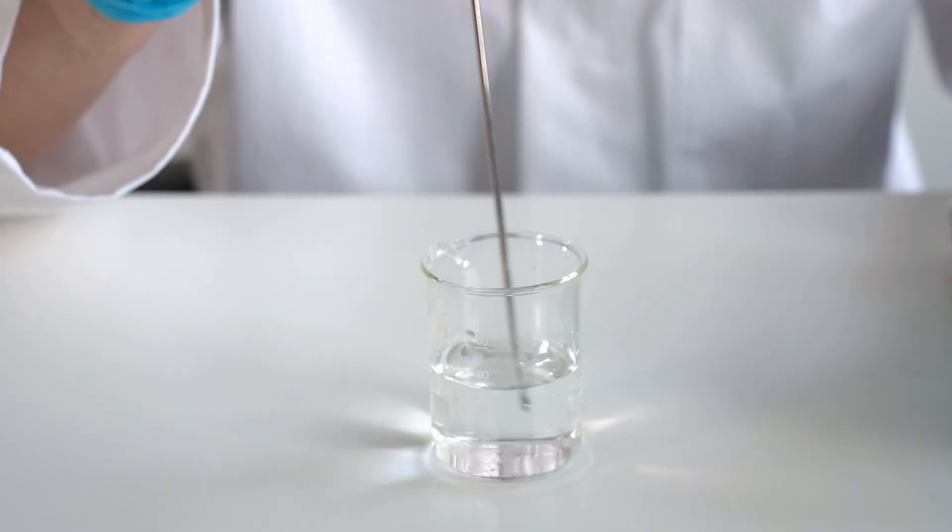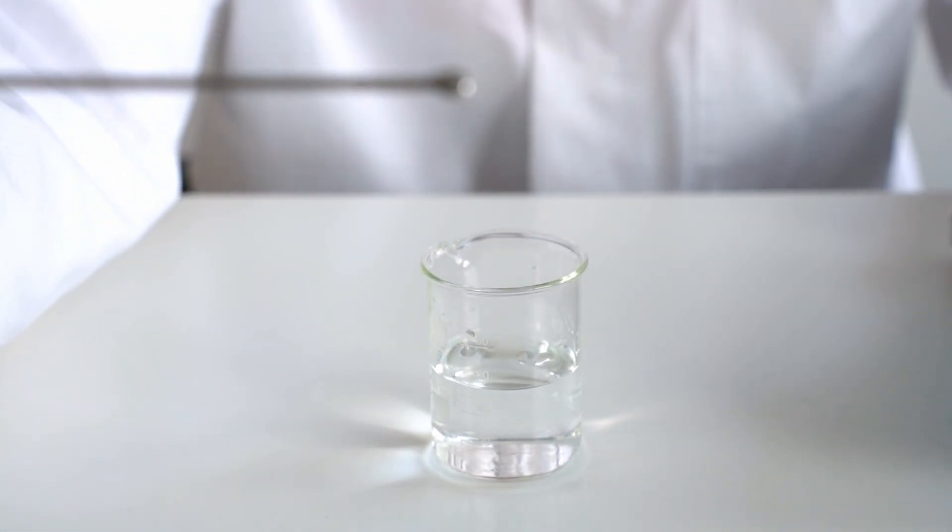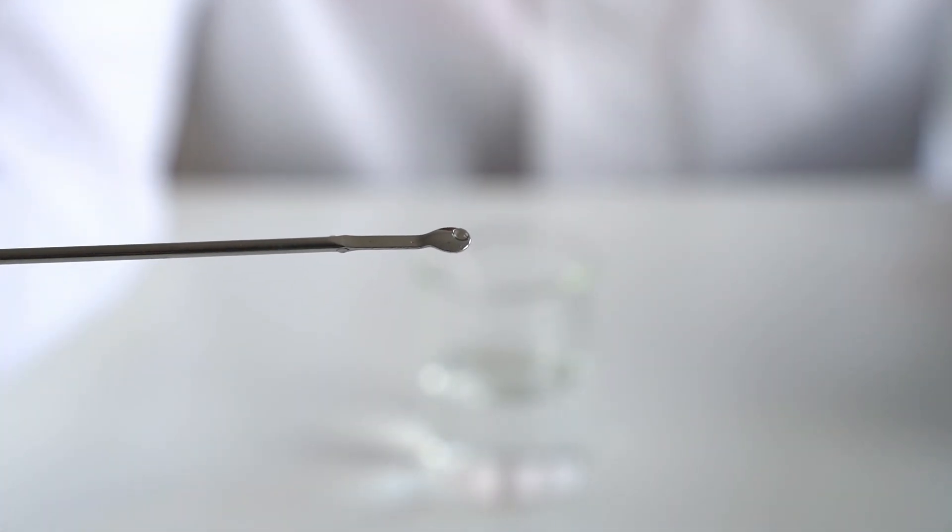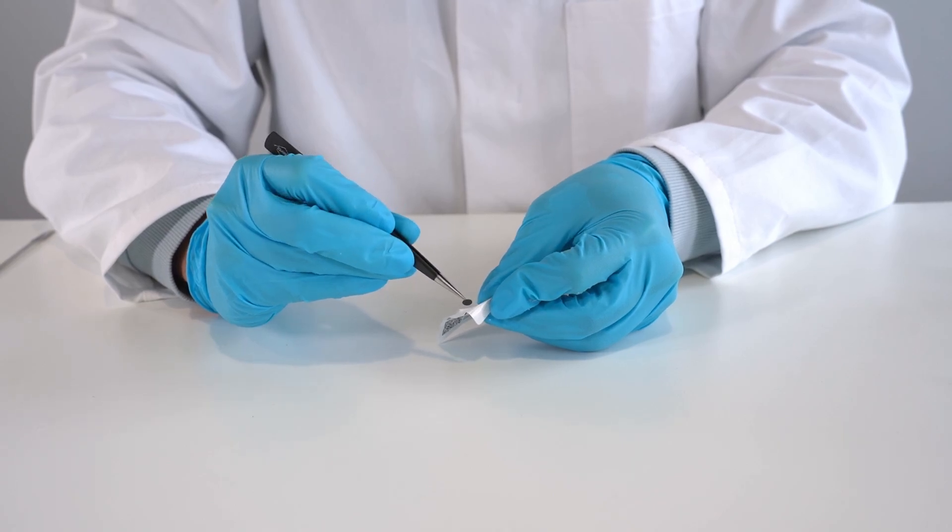Next, dip the spoon of the spatula into distilled water to wet its surface. A small water drop should remain on the back of the spoon. Carefully remove the sensor spot from the package surface and place the sensor spot on the spoon with the water drop, with the gray matte side up.